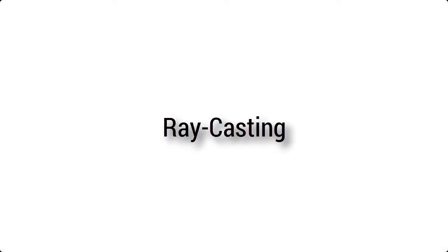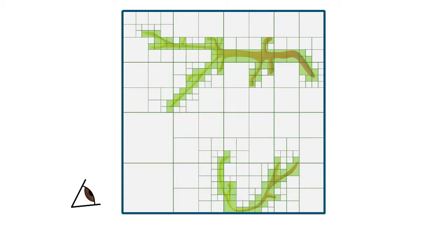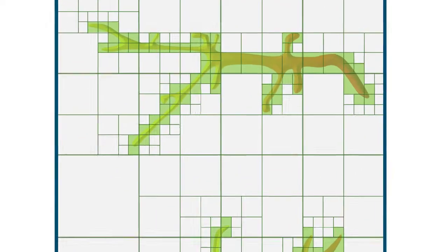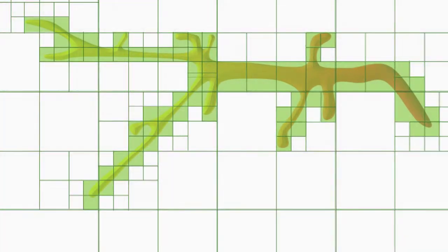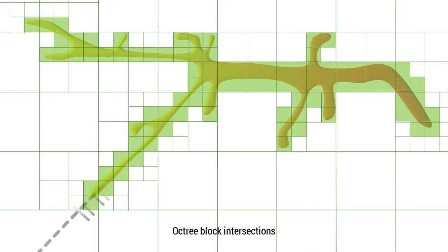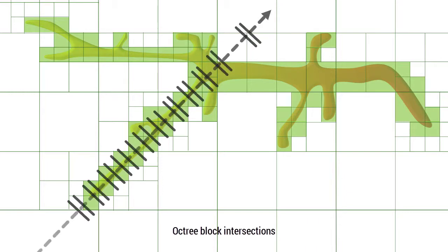Octree empty space skipping and SparseLeap have very different properties during ray casting. Using an octree, each ray has to compute many intersections with the geometry of octree nodes. This is costly, and empty space is skipped in unnecessarily small steps.